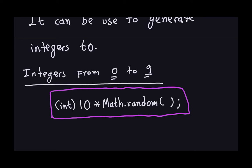For example, if you want pseudo-random integers between 0 and 9, you can use this line of code. Since Math.random() generates a double between 0 inclusive and 1 exclusive, multiplying by 10 gives you the first digit after the decimal point. Casting that to an integer truncates it, giving you an integer between 0 and 9 inclusive.